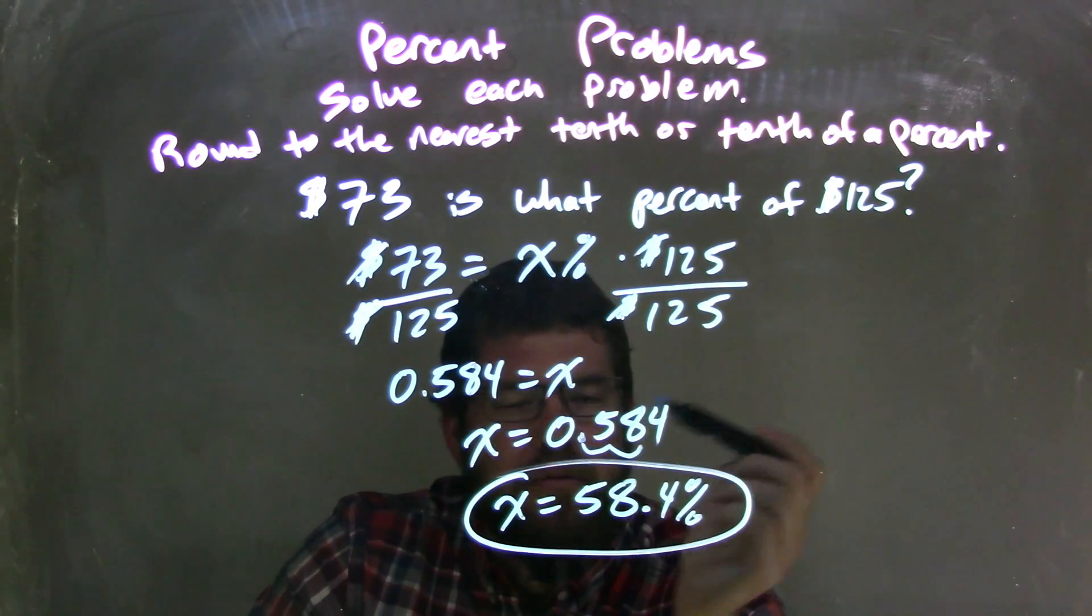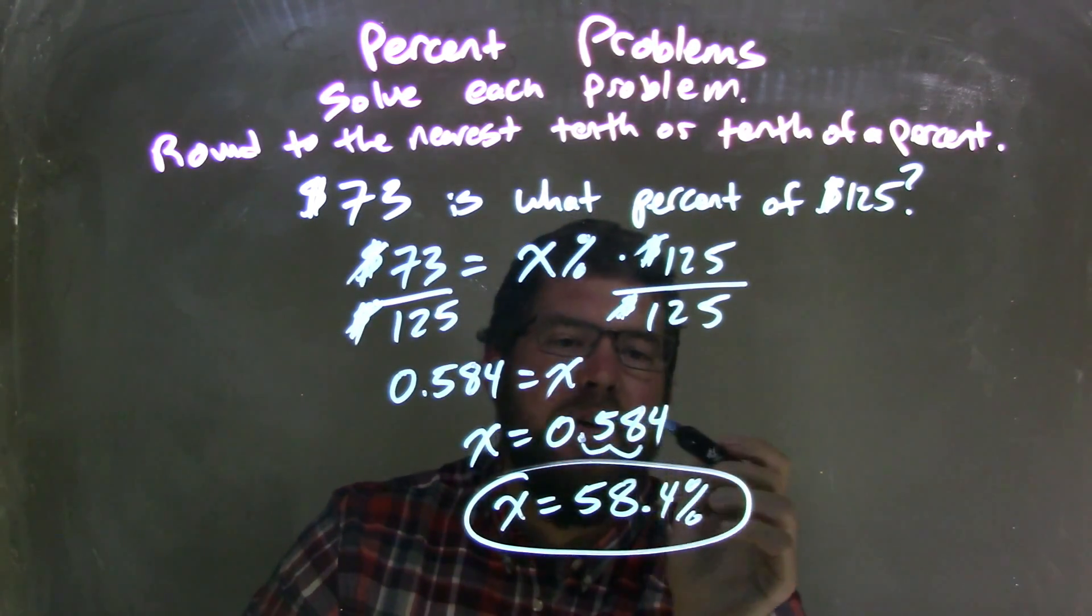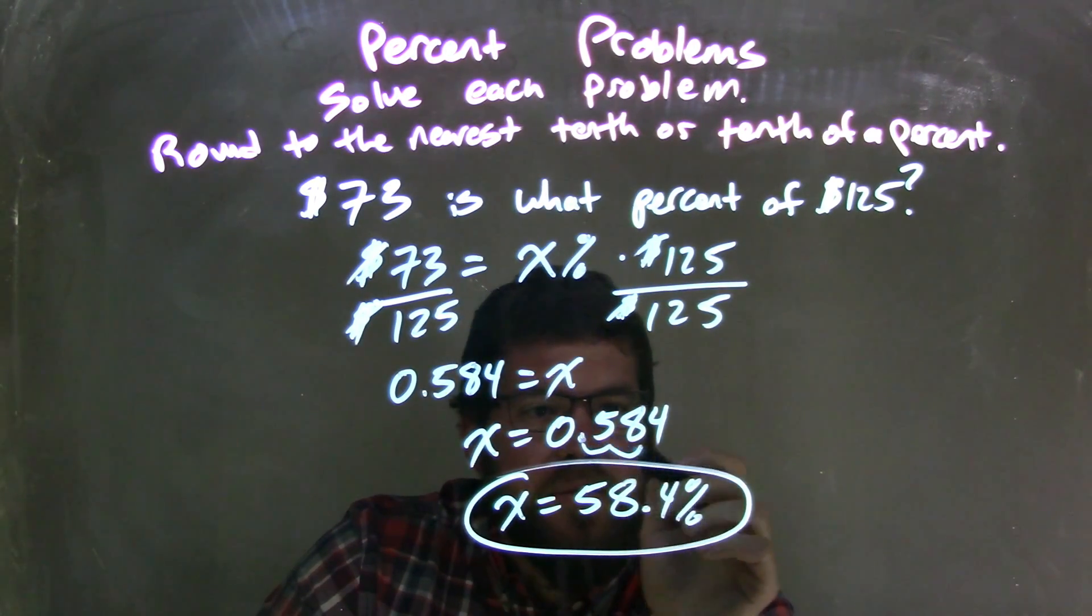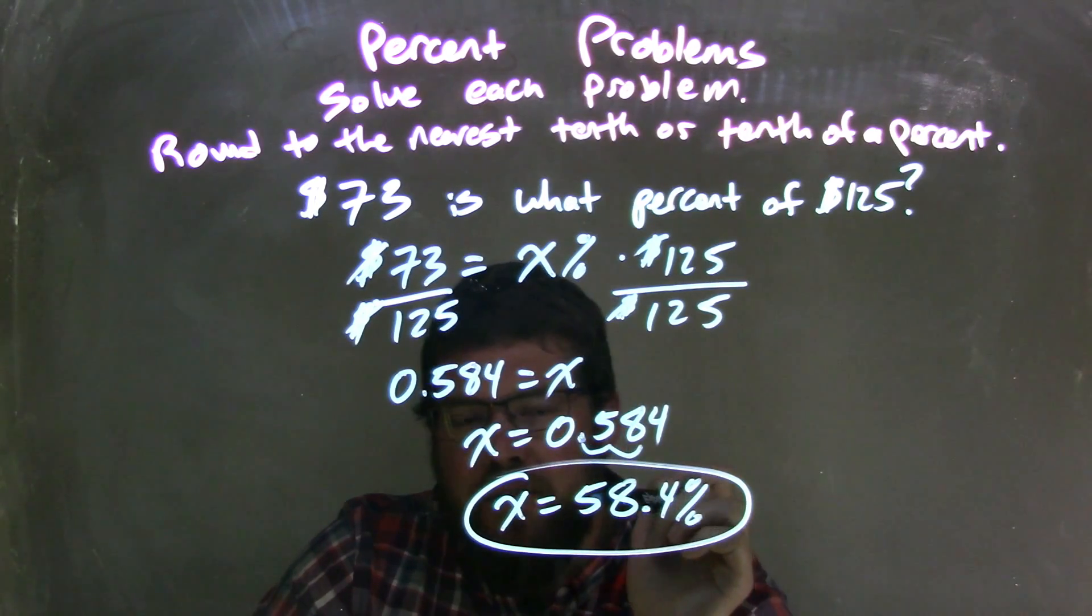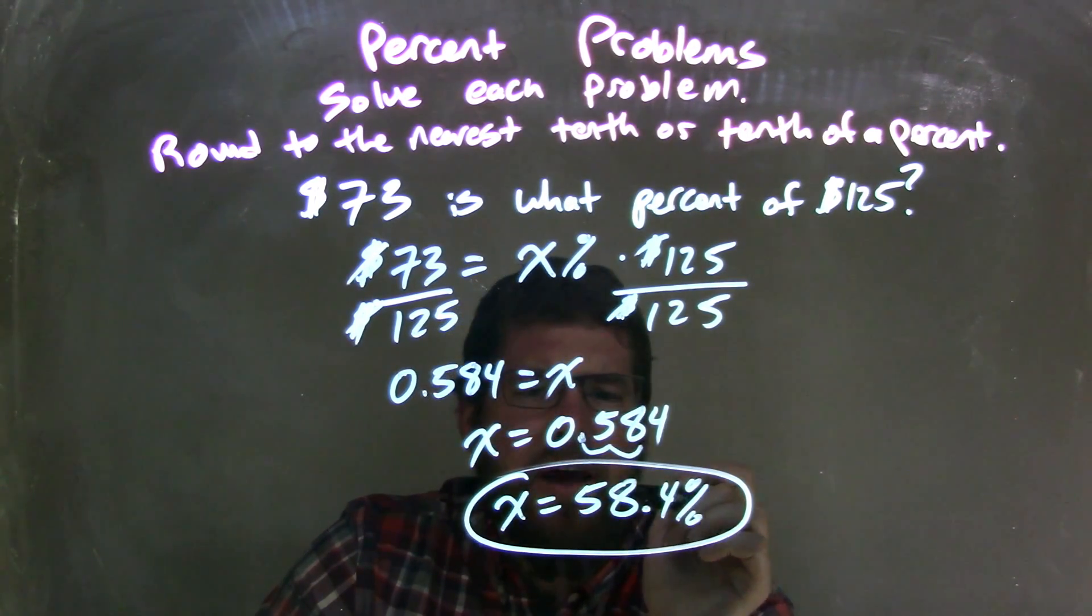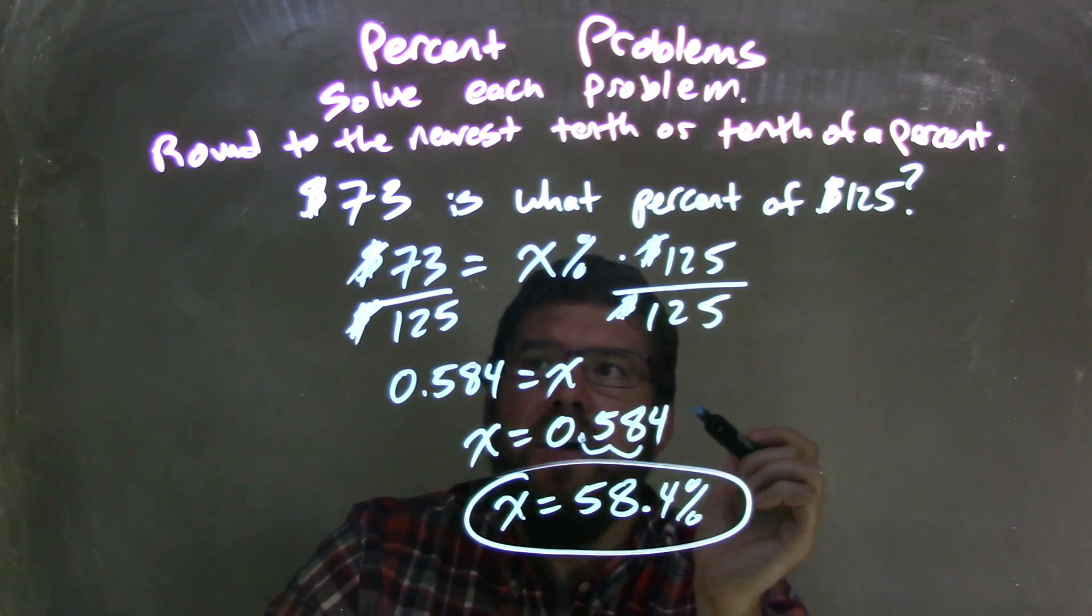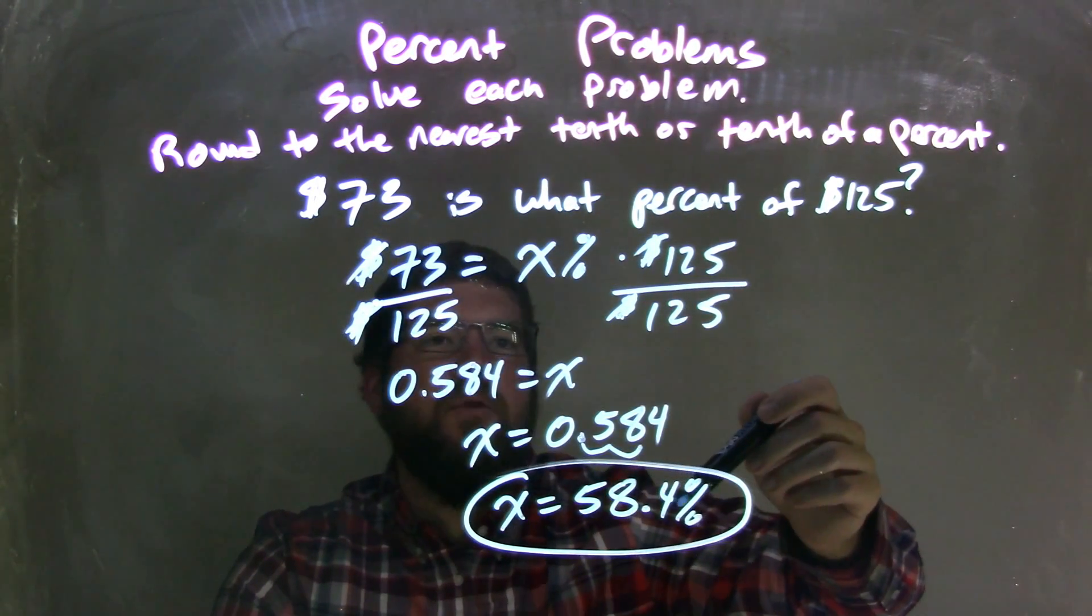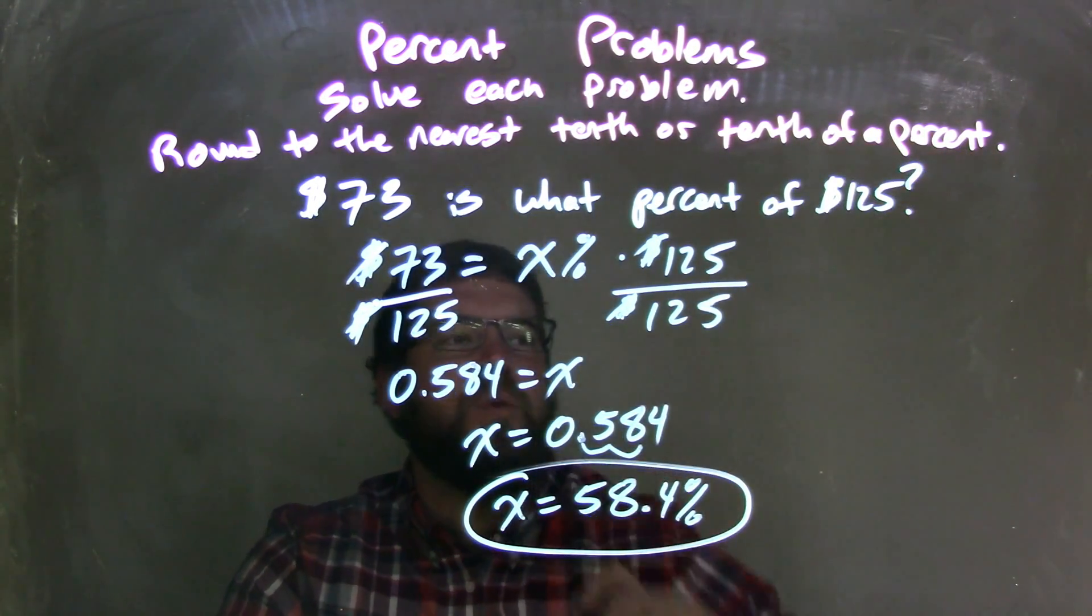We wrote it to have x come first, because that looks nicer. We got x equals 0.584. I then had to write that as a percent, so I moved the decimal over two units, leaving me with my final answer of x equals 58.4 percent, answering the question that $73 is 58.4 percent of $125.